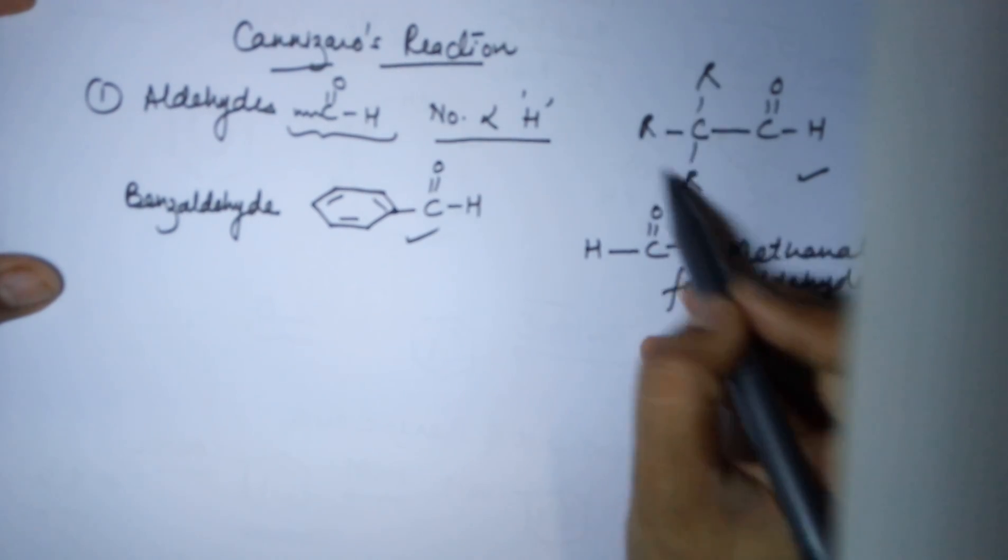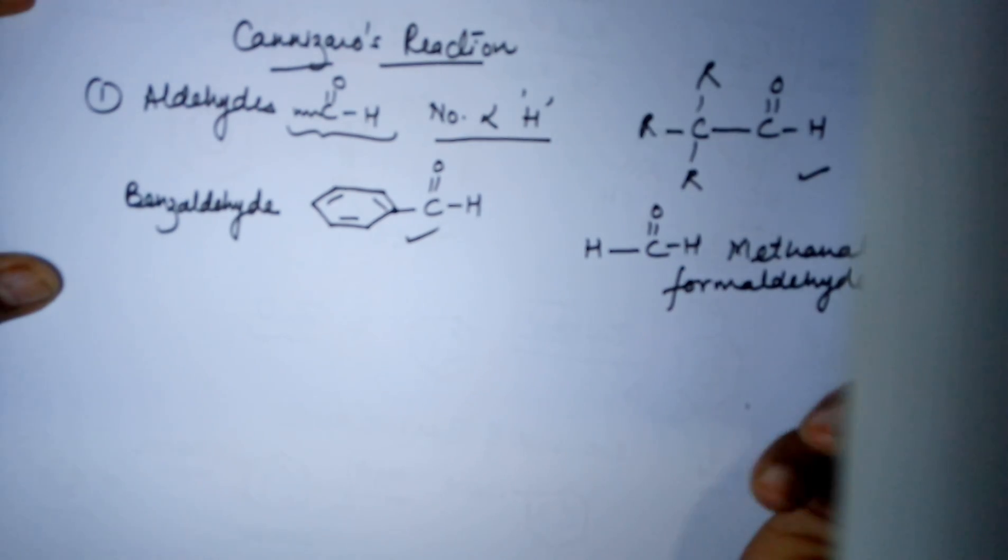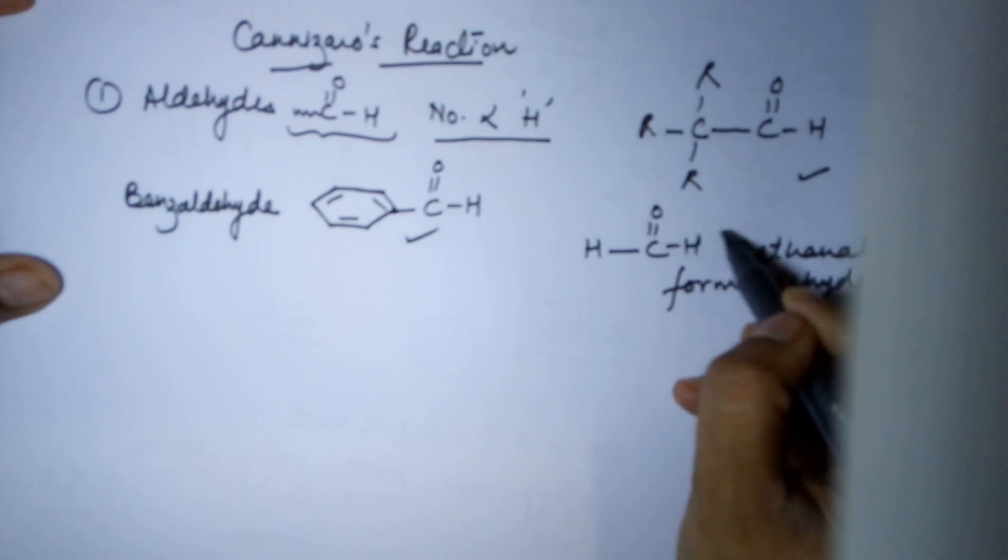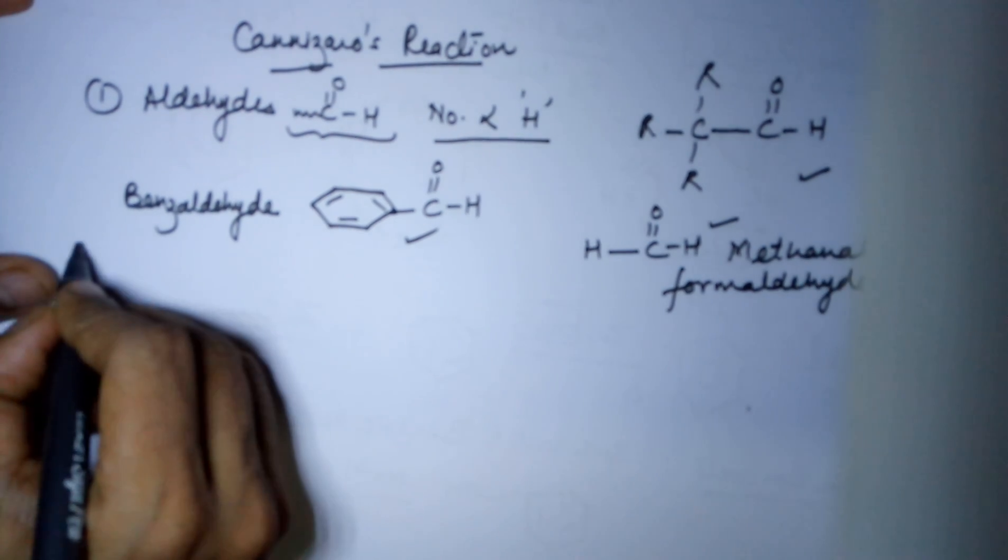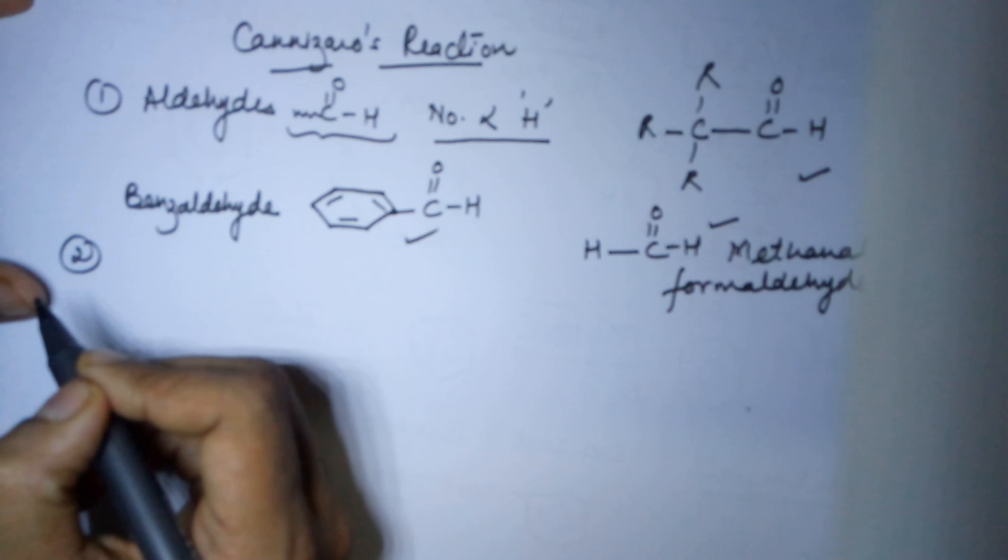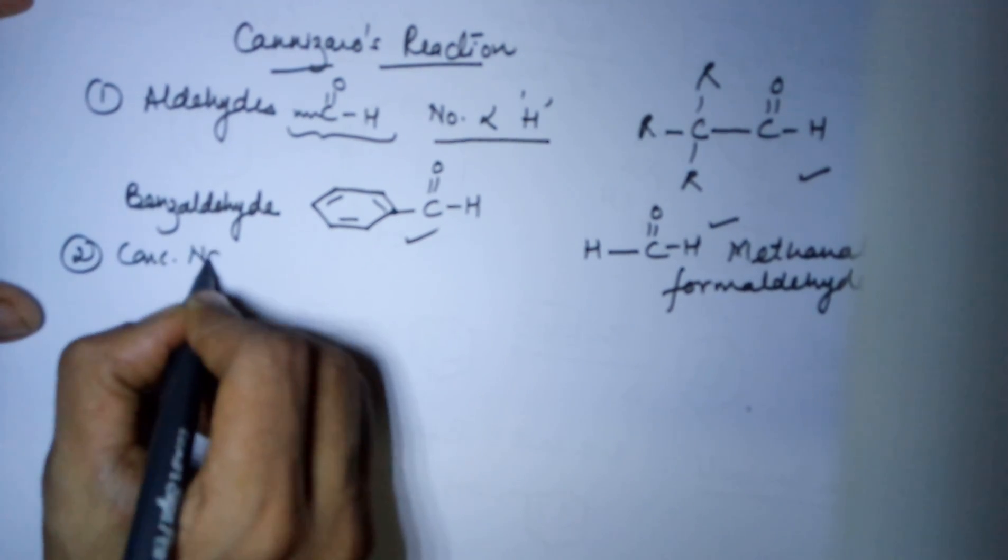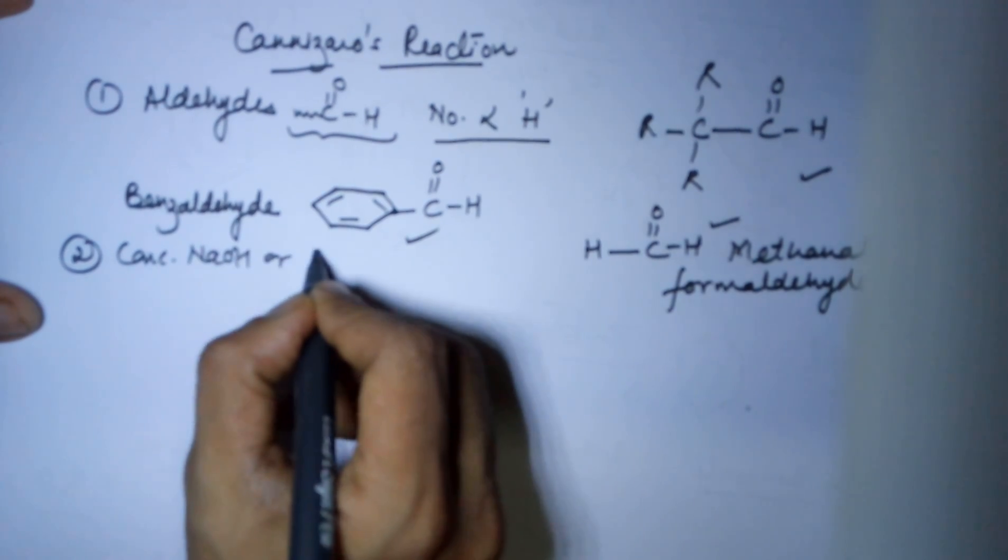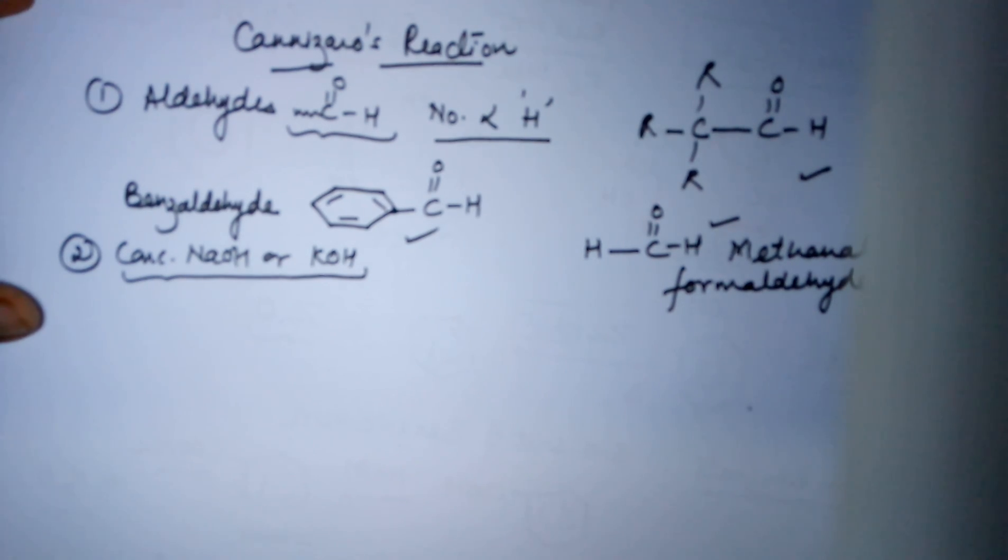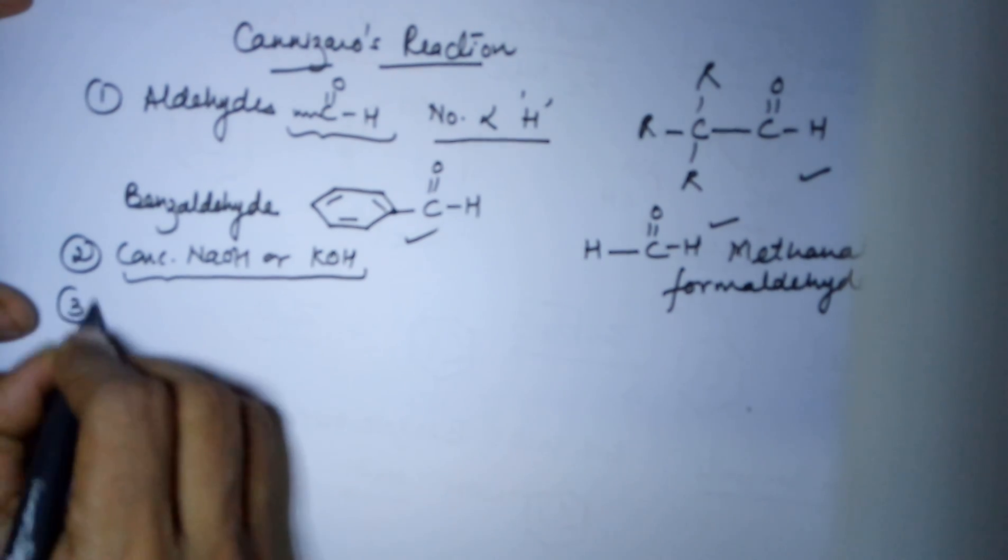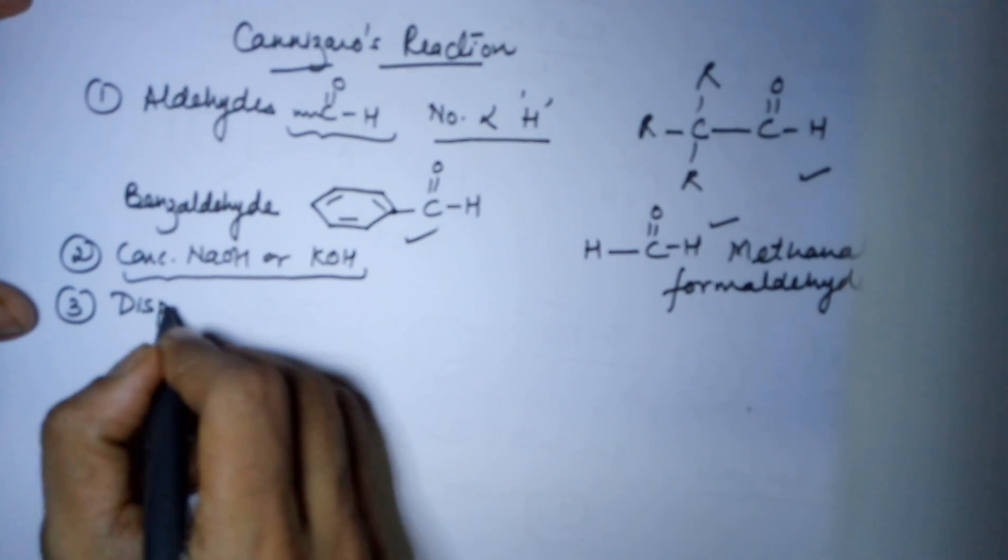This is your benzaldehyde and this is 2,2,2-trialkyl ethanol. Now if these are the compounds then they can undergo Cannizzaro's reaction. That was the first condition. The second important condition for this is you require a concentrated NaOH, a strong alkali, or KOH is the requirement reagent for this type of reaction. And thirdly it is a disproportionation reaction.